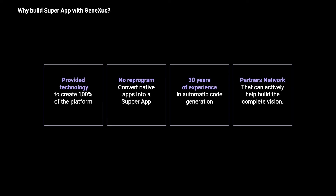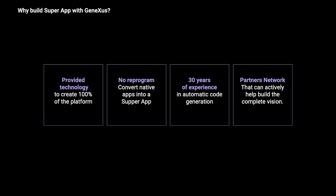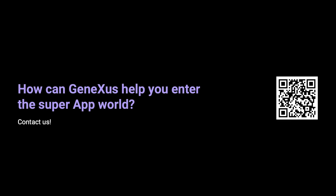So why build super apps with GeneXus? First, because GeneXus gives you all the components and technology to create a 100% super app solution — it's the only tool that provides everything needed to build a full super app and mini app solution. Second, you can convert any native application into a super app without any rework. GeneXus has more than 30 years of experience in the market generating automatic code to build innovative solutions with minimum effort. Additionally, through our partners network, we can help you build a complete solution. For those interested, our website has all the information about super apps and a platform to reach us for feedback. Thank you.